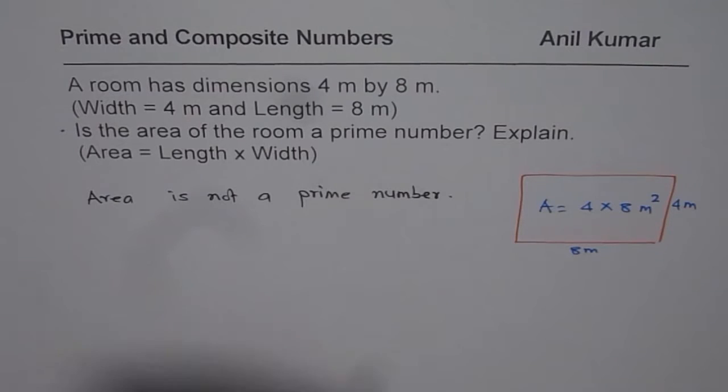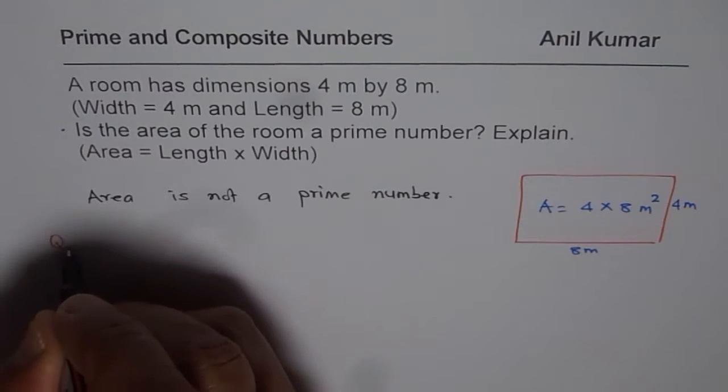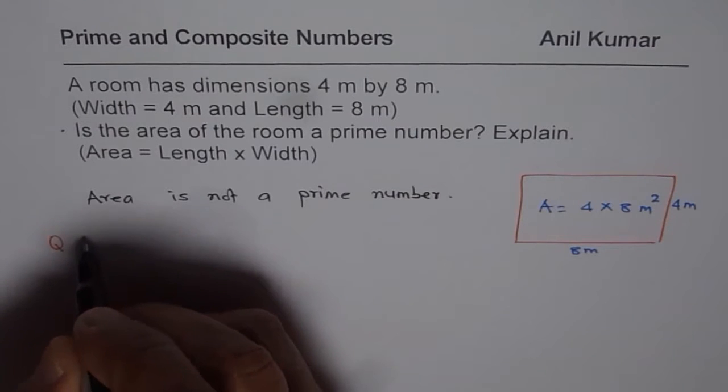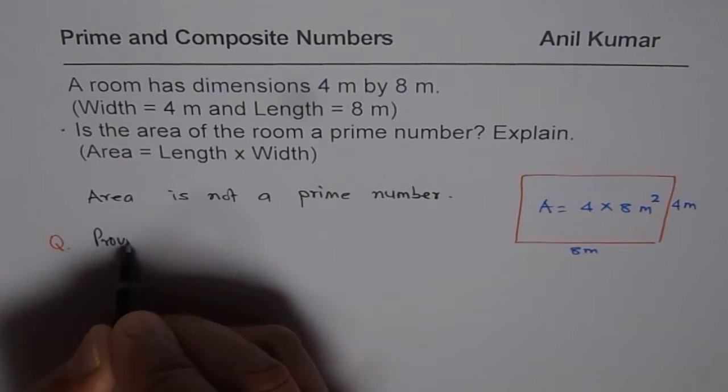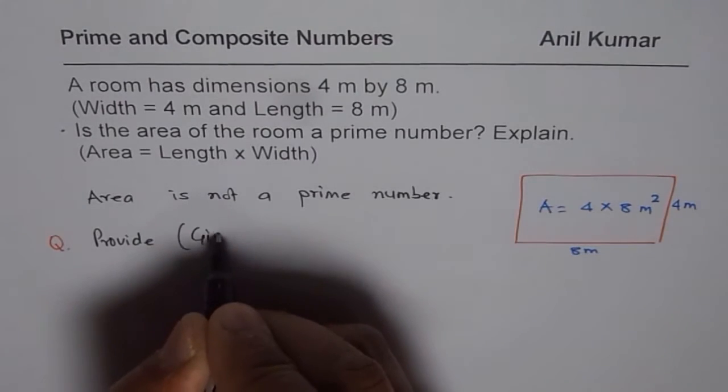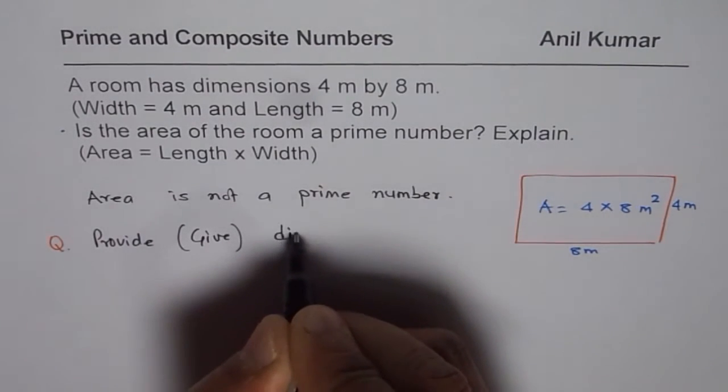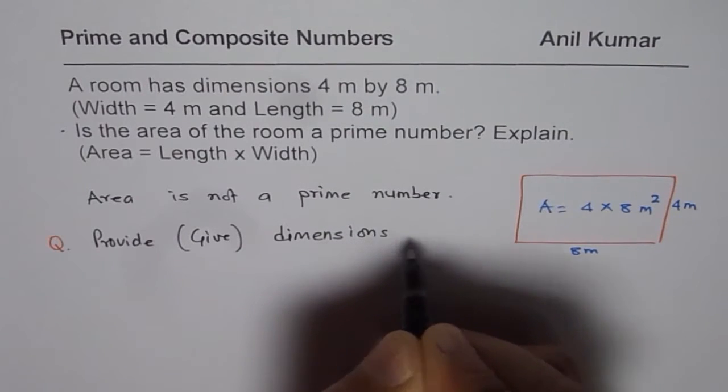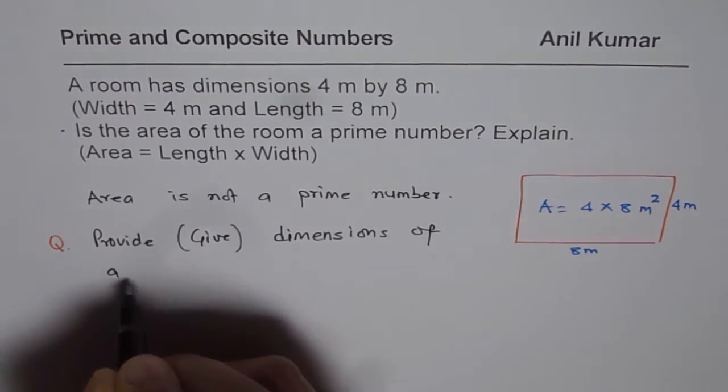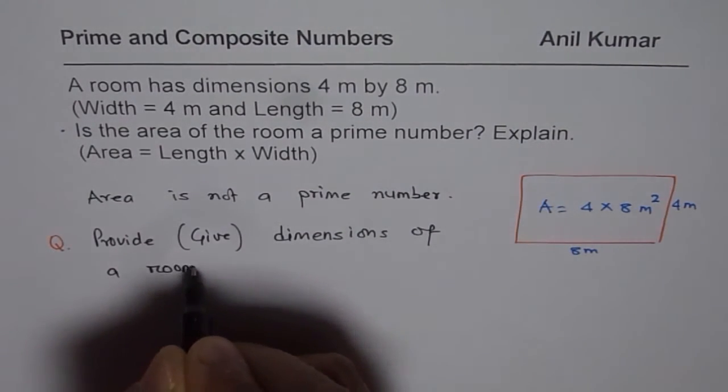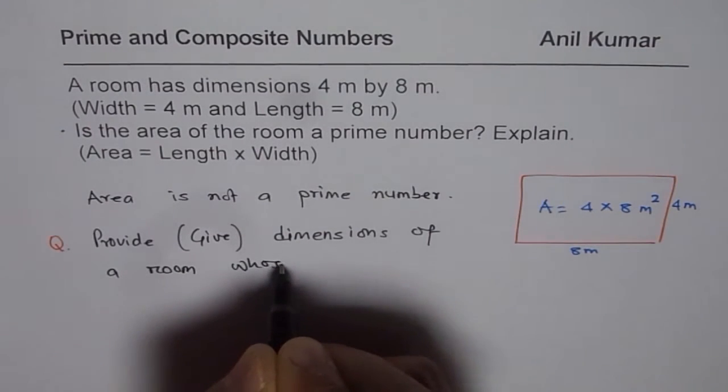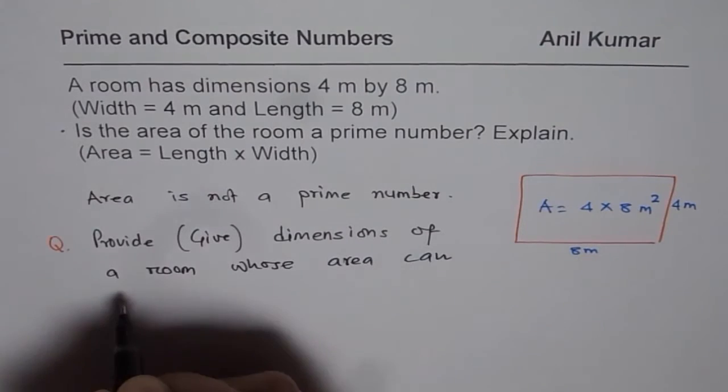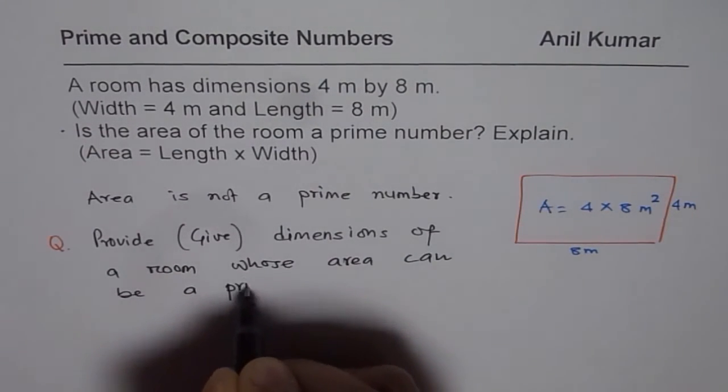Now, here is a question for you. The question for you is very interesting. It is, provide or give dimensions of a room whose area can be a prime number.